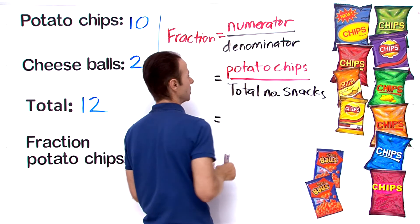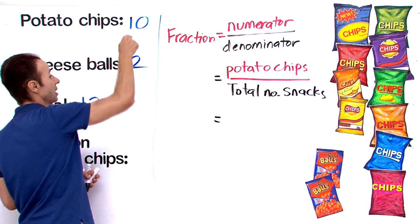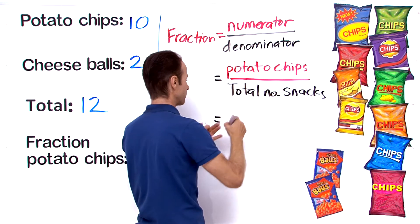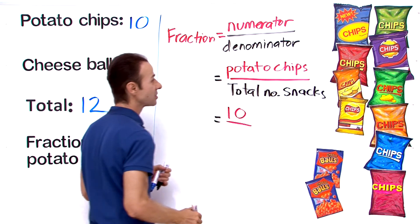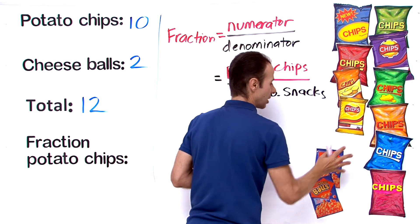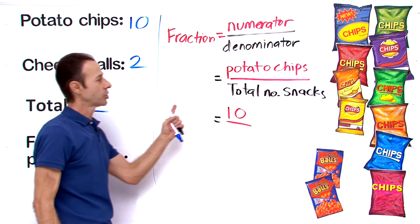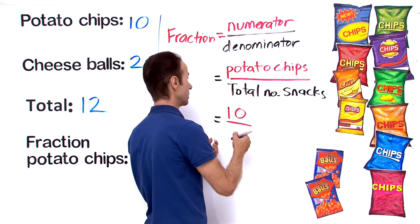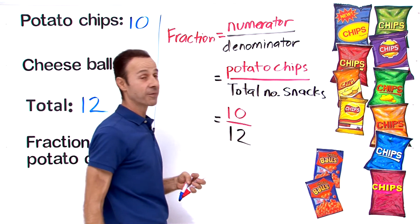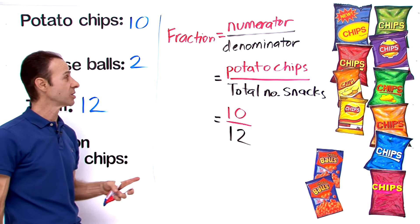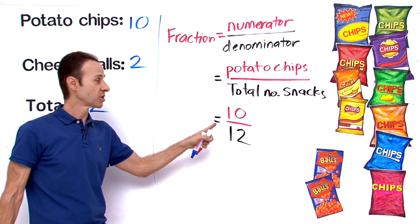What is that equal? Let's work it out. The number of potato chips is 10, so we put a 10 on the top. The total number of snacks - that is the 10 plus the 2 all together, the total is 12. The total number of snacks is 12, so I write 12 here. That is our fraction, that is the fraction of potato chips compared to all of them.